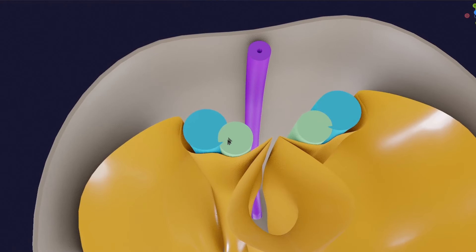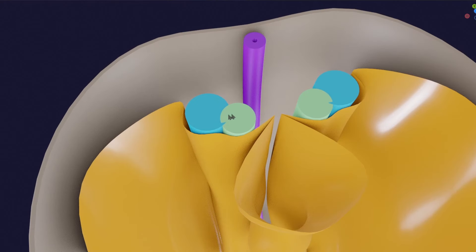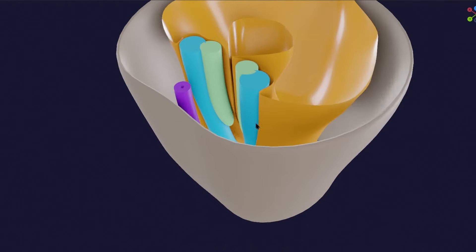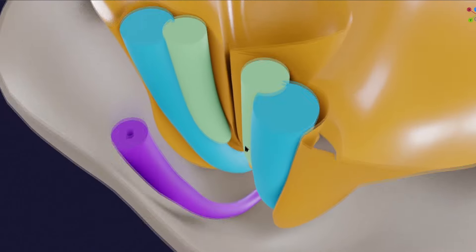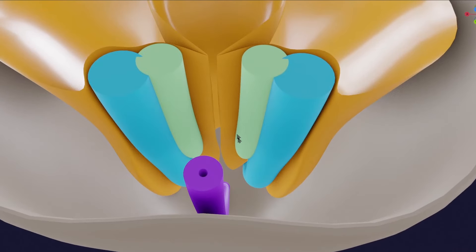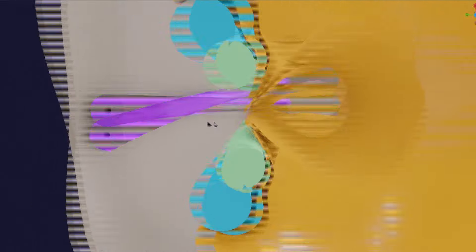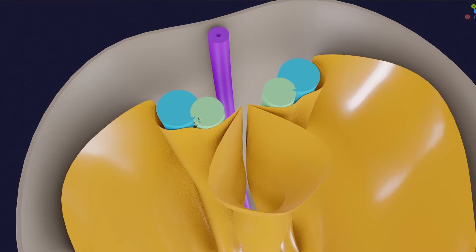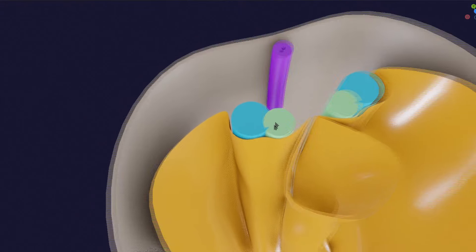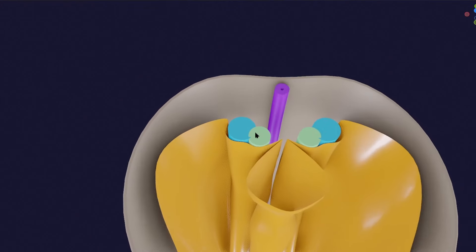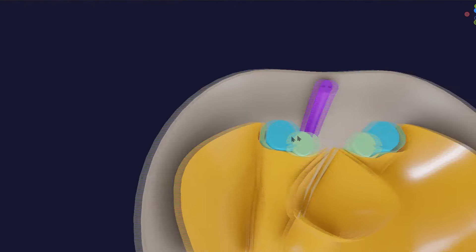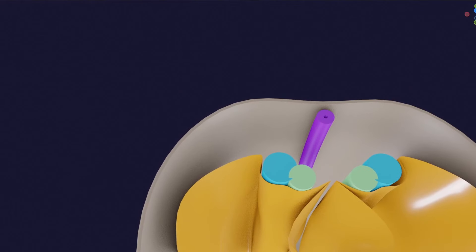The intermediate mesoderm will proliferate and grow in size. Along with this main chord-like structure, it will also form another chord-like structure in the middle part — ventromedial to the main structure. Let me explain the names and important concepts of these two chord-like structures.